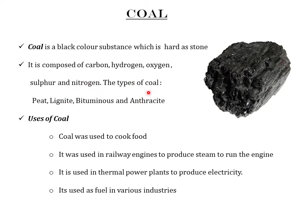Anthracite is the hardest coal and it contains about 90% carbon. It is the best coal because the more the carbon content, the better the coal. Bituminous contains only 80% carbon, lignite contains 70%, and peat contains 60%. In households we use bituminous coal because it produces more heat than peat and lignite. Anthracite is mainly used for industrial purposes.